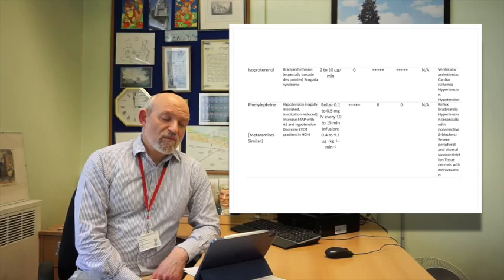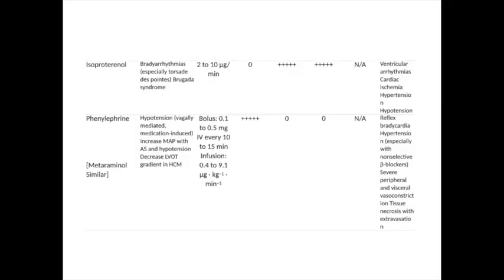Much less commonly used today, but still of some value, is the fairly pure chronotrope isoprenaline, also known as isoproterenol. Phenylephrine is used in circumstances of hypotension, particularly for vagally mediated or medication-induced falls in blood pressure. It would increase mean arterial pressure, and similar effects are achieved through use of metaraminol.